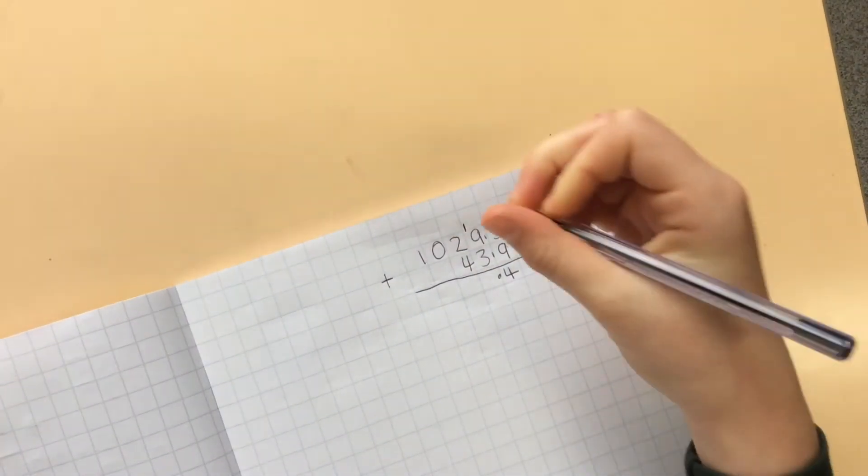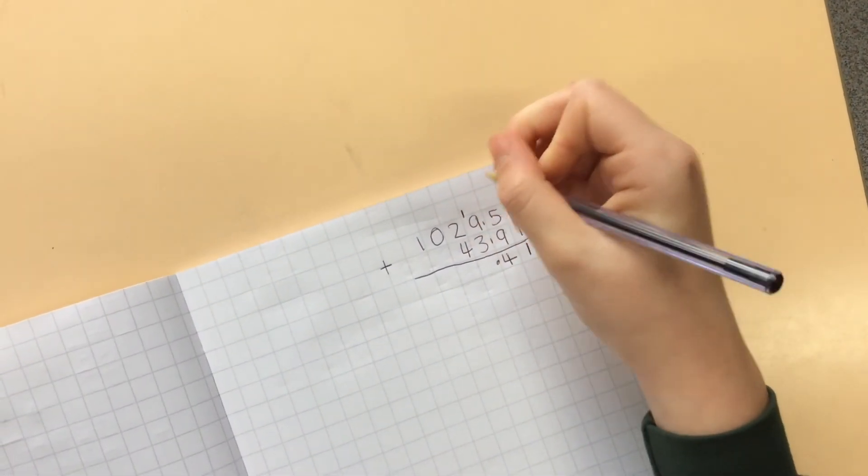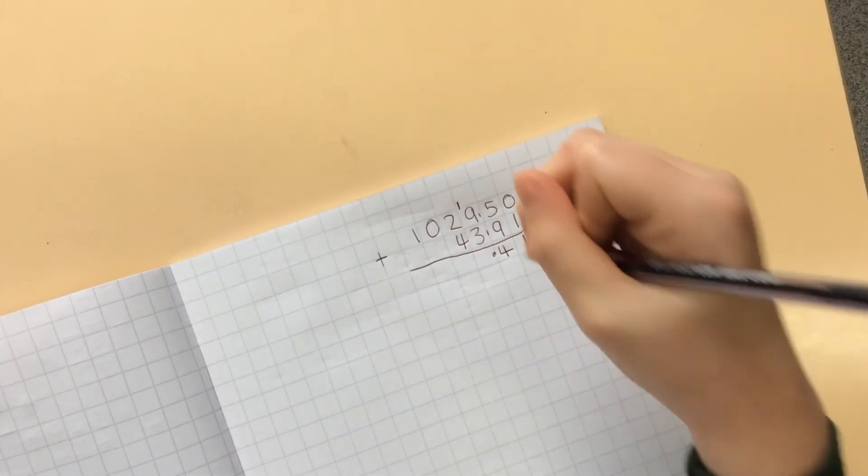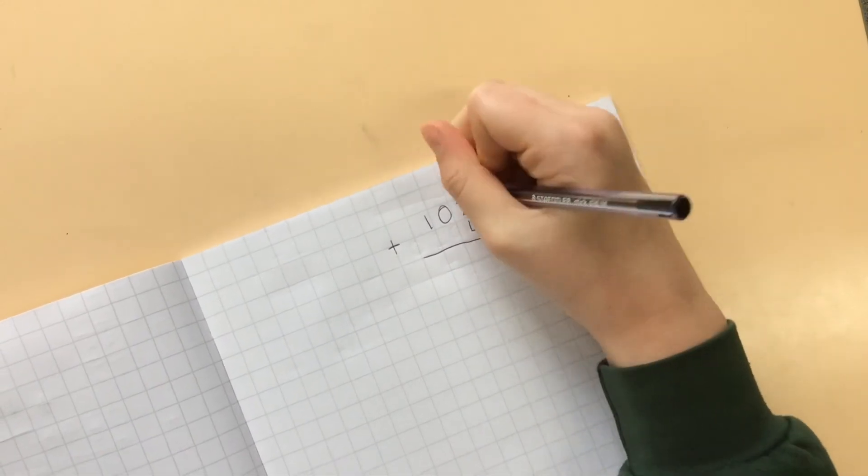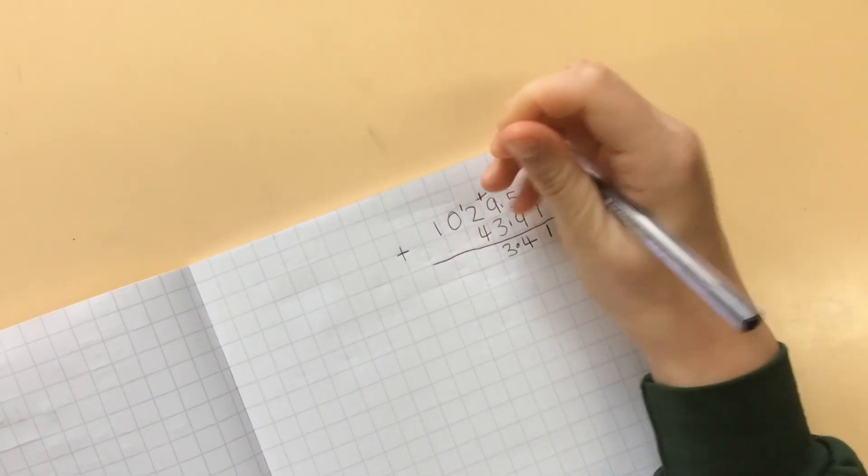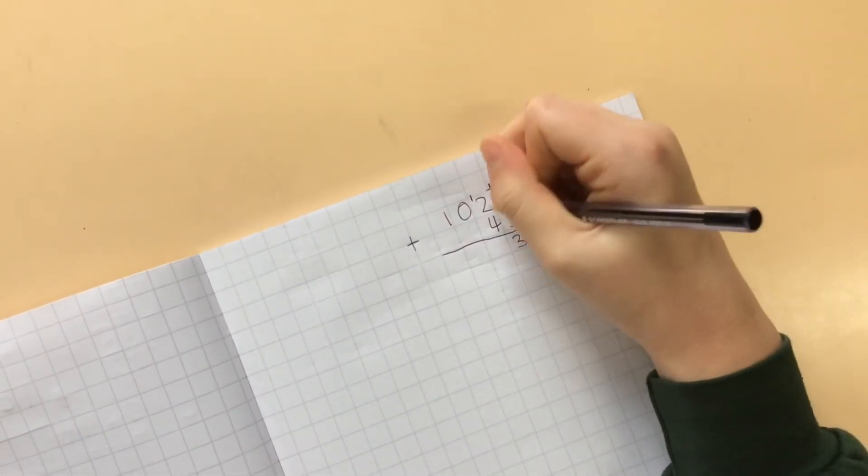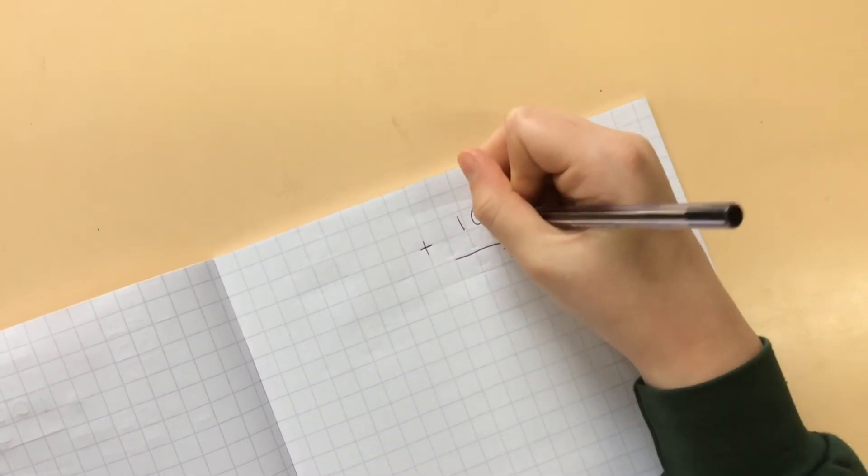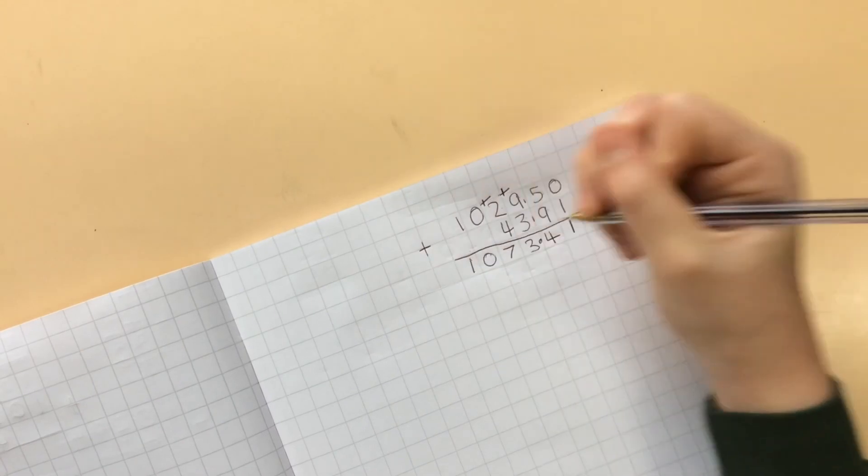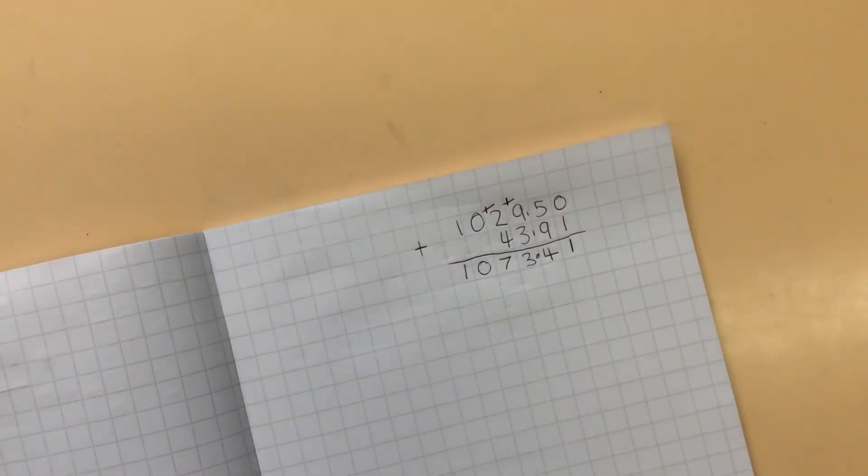And then I do nine plus three which is twelve and plus one which is thirteen. Then put the one up there again and cross out this one so I know I've done that one, and then I'm going to cross out this one and here I have my answer.